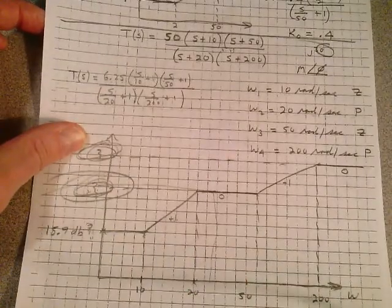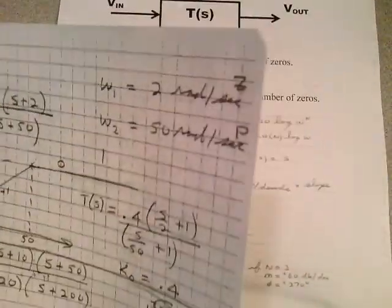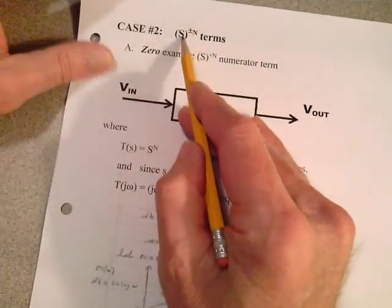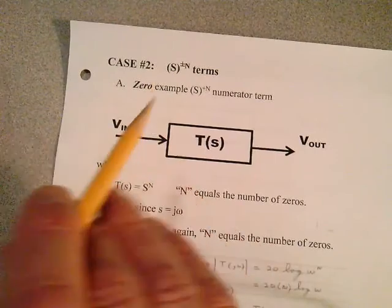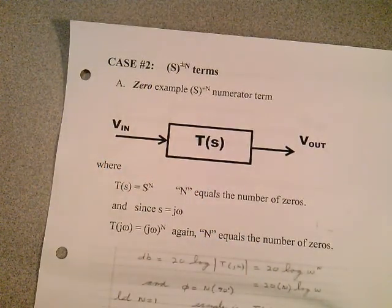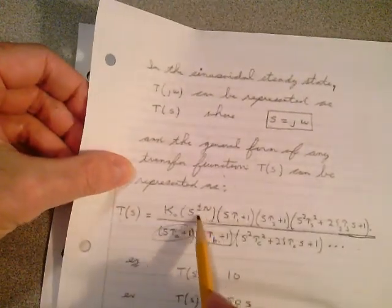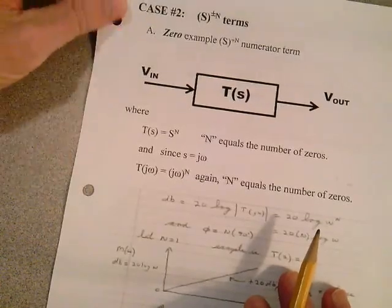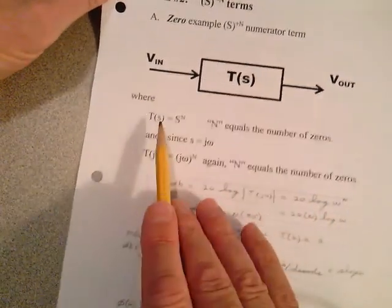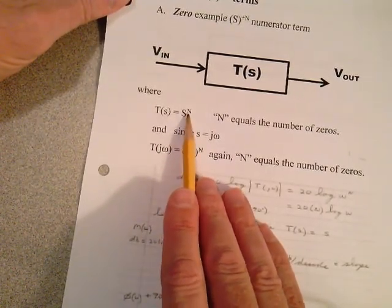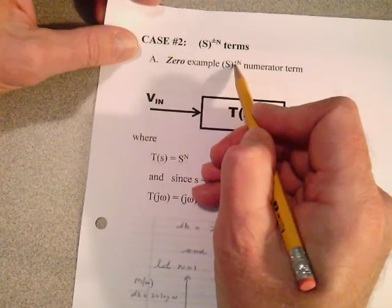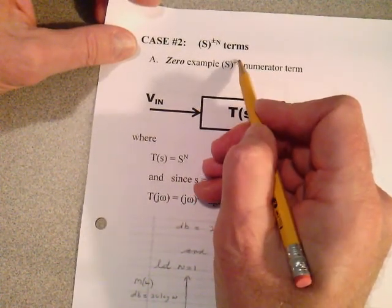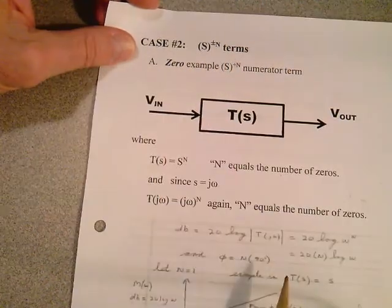These Bode plots are going to make things a lot easier. All we've done so far is look at single S terms and the K0 case. The only other thing I want to cover is Case 2, where we have S to the plus 1 or S to the minus 1 terms, on page 190. These are just single S terms. T of S equals S to the N, where N equals the number of zeros because they're in the numerator — S to the 1, S to the 2, S to the 3 — zeros at the origin.